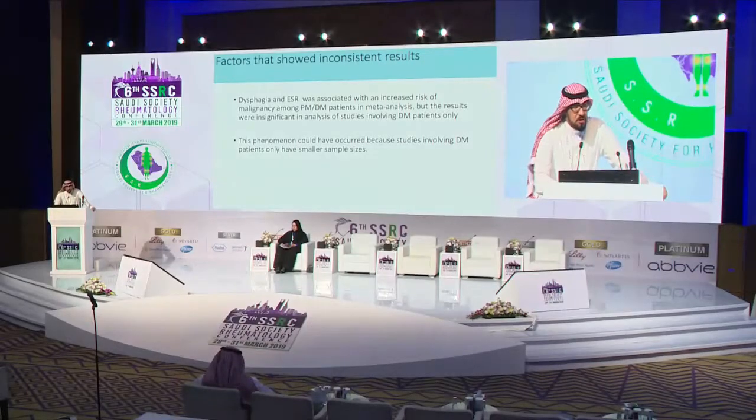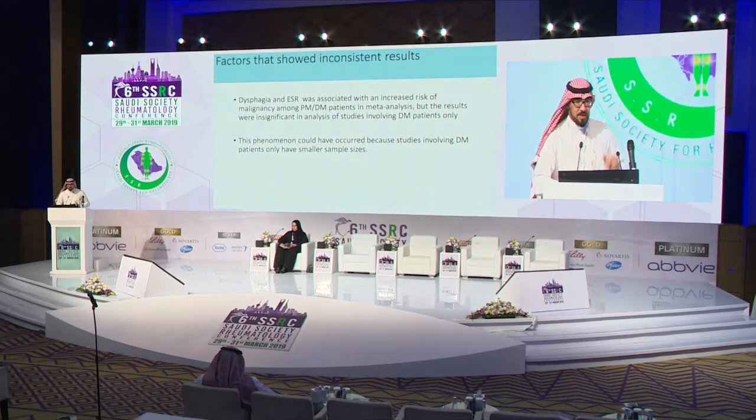By contrast, factors associated with reduced risk include: interstitial lung disease, arthritis, arthralgia, Raynaud's phenomenon, anti-extractable nuclear antigen antibodies (but not isolated ANA, since 50% of malignancies will have isolated ANA), and anti-Jo1 antibodies. Factors showing inconsistent results are dysphagia and ESR — both were significant predictive factors in studies evaluating both dermatomyositis and polymyositis, but not in studies looking at dermatomyositis alone, possibly due to smaller sample sizes.